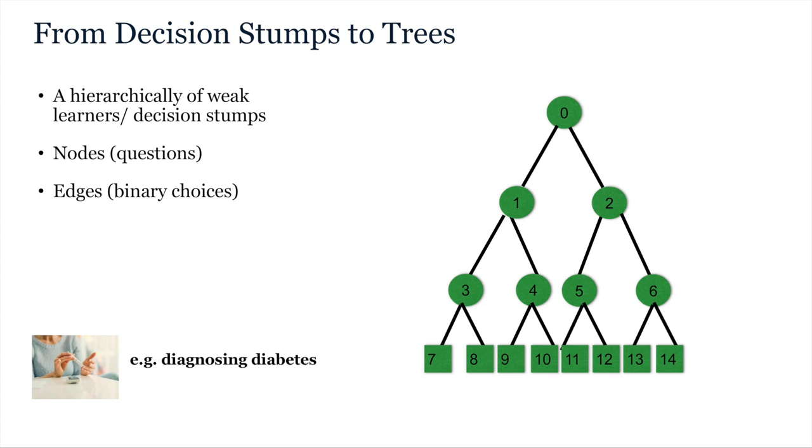For example, say we have a number of features, measurements taken from patients from which we are interested in building a classifier for diabetes. These features reflect blood glucose level, age and BMI. At each stump in the hierarchy we ask a different question from the data, on just one of the features. For example, the first question we might ask is whether blood glucose is over 12 millimoles. This is the same as the decision stump example from the previous video.